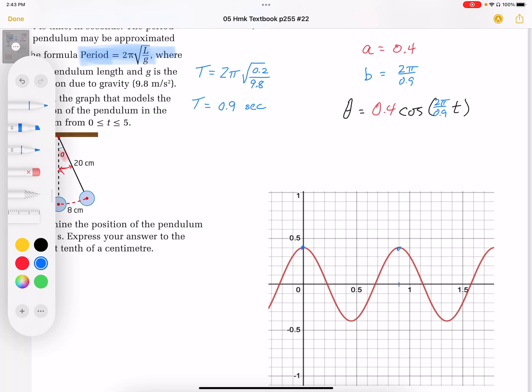It's going to start at its maximum. And then the maximum angle. And then as it swings, the angle is going to decrease to zero. And then it's going to go on to the other side. And then come back up and repeat itself.